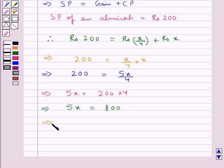Now, X would be equal to Rs. 800 upon 5. 5 into 160 is 800. Therefore, we get X is equal to Rs. 160.